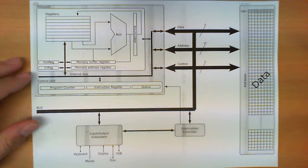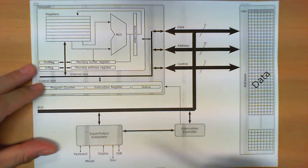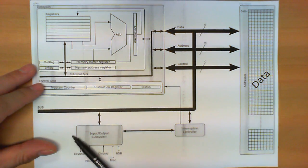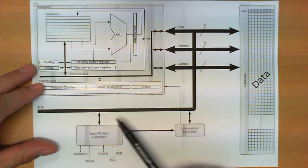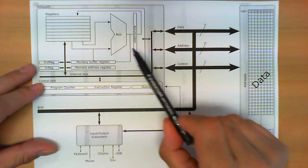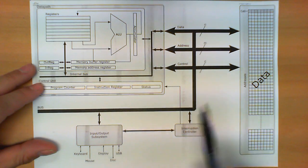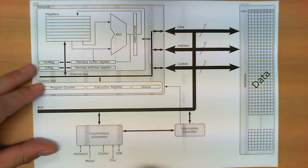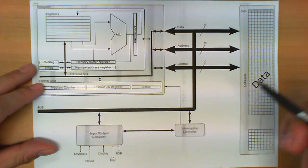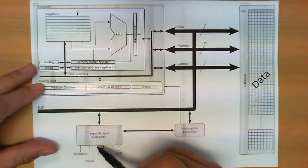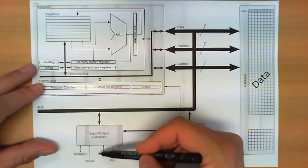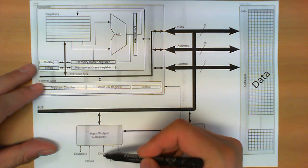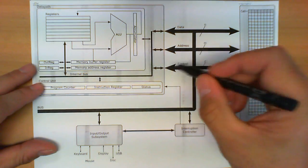In this video we're going to explain another element of a computer system, that is the input-output subsystem. As we can see here, it is the subsystem connected to the rest of the components, but is in charge of interacting with all these devices that are responsible for either entering information within the system or being used to store or show information coming from the system.